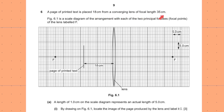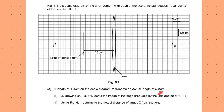An object is placed some centimeters from a converging lens of focal length 35 cm. Note the scale — each box is 1 cm, so 5 boxes = 5 cm. Figure 6.1 is a scale diagram with the two principal focal points labeled F. The object is placed between O and F. A length of 1 cm on the scale diagram represents an actual length of 5 cm. By drawing on 6.1, locate the image and label it I.